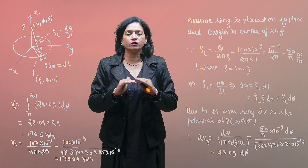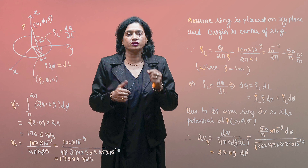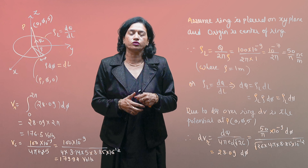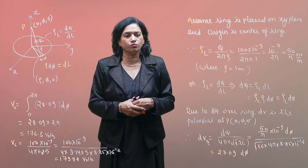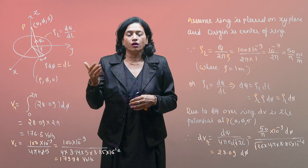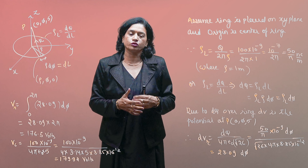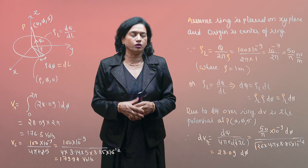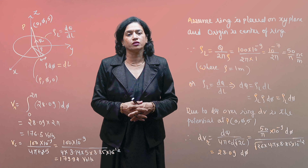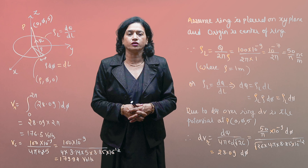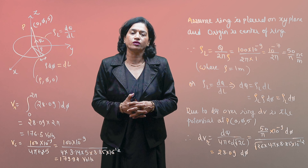The ring's spread charge gives 176.5 volts at point P, while concentrating all charge at the origin gives 179.92 volts, showing a small difference due to the distributed nature of the ring charge versus a point charge.